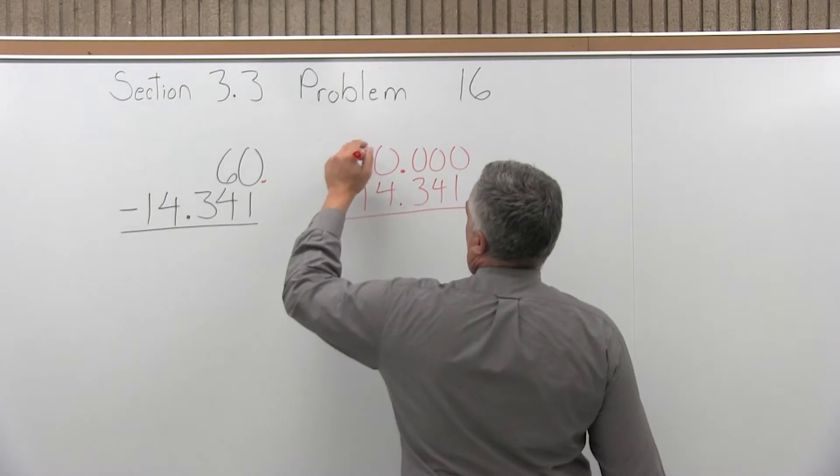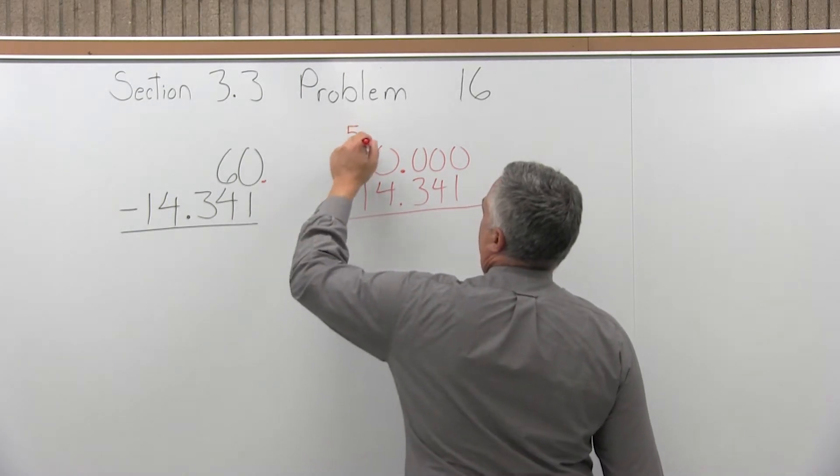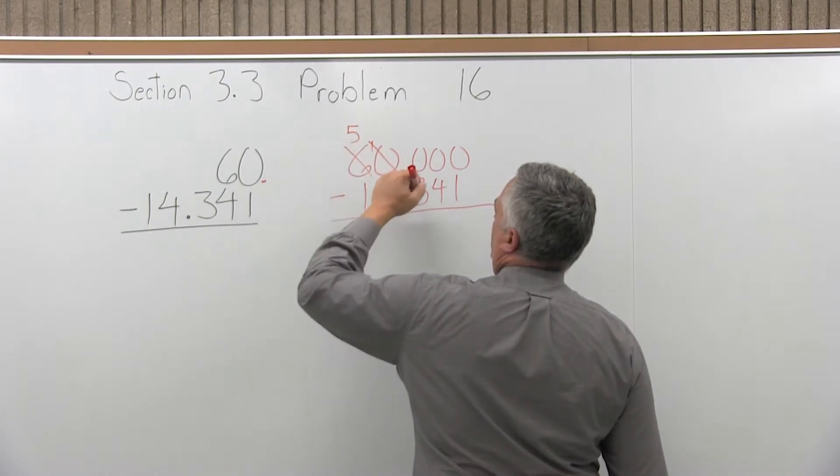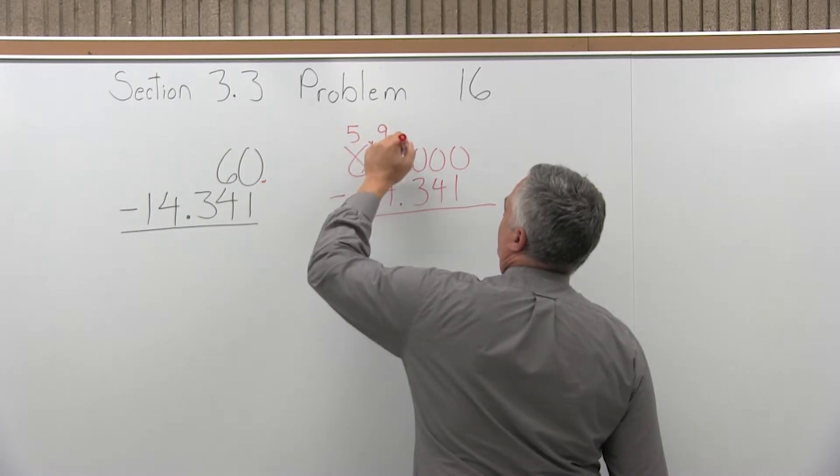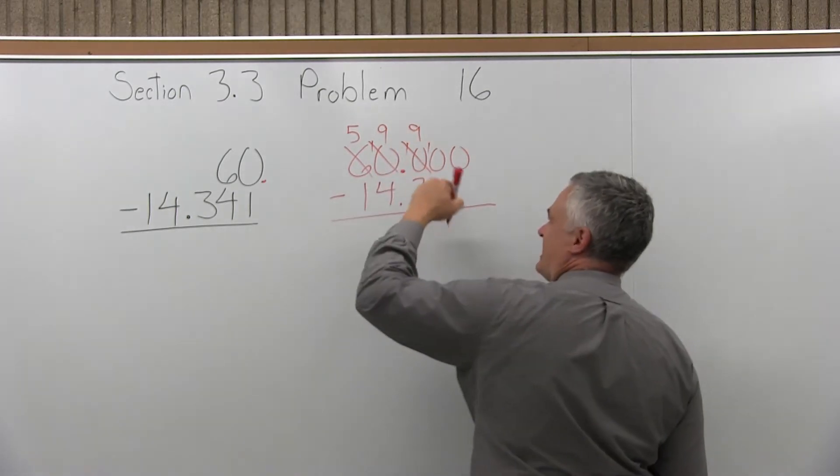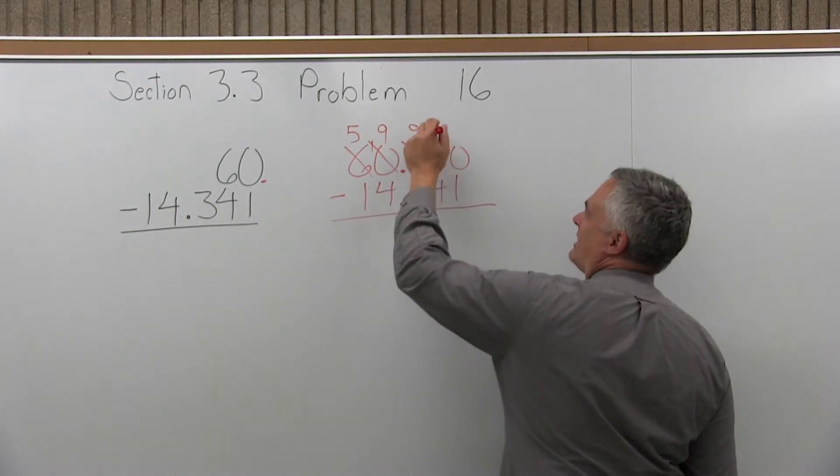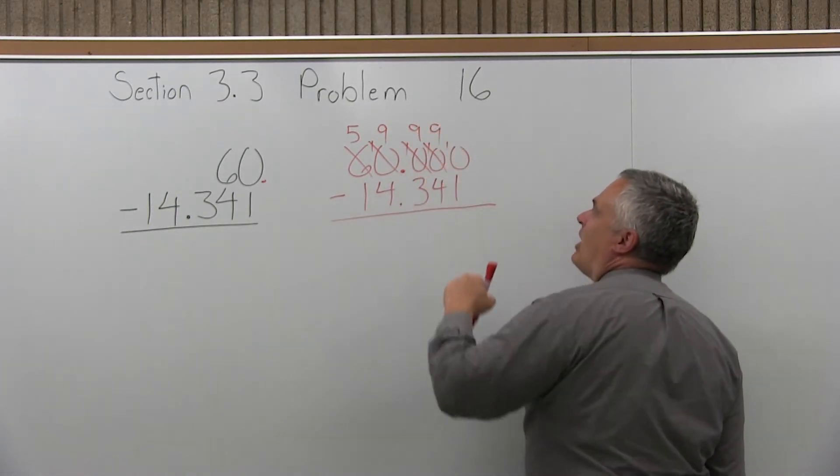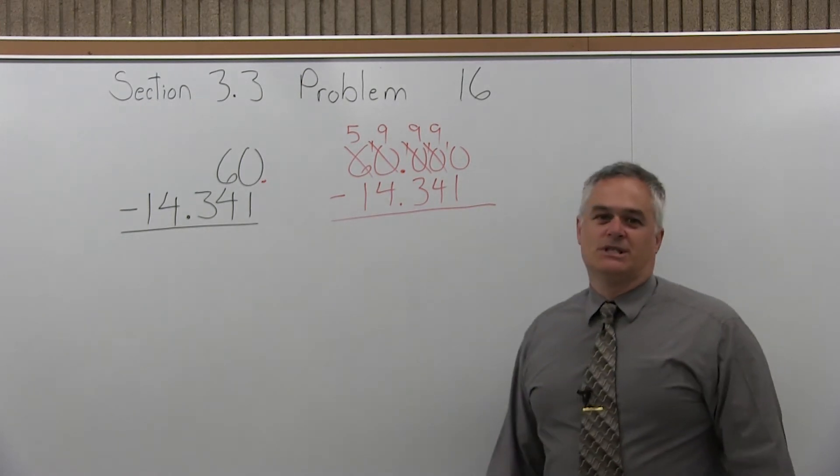So let's borrow from the six. We're going to cross off that six, make it a five, which can make the next zero into a ten. We're going to borrow from that right away, make that a nine, which makes the next zero over a ten. Borrow from that, which makes it a nine, which makes the next zero over a ten. Borrow from that, that becomes a nine. And now, finally, the rightmost digit is a ten.